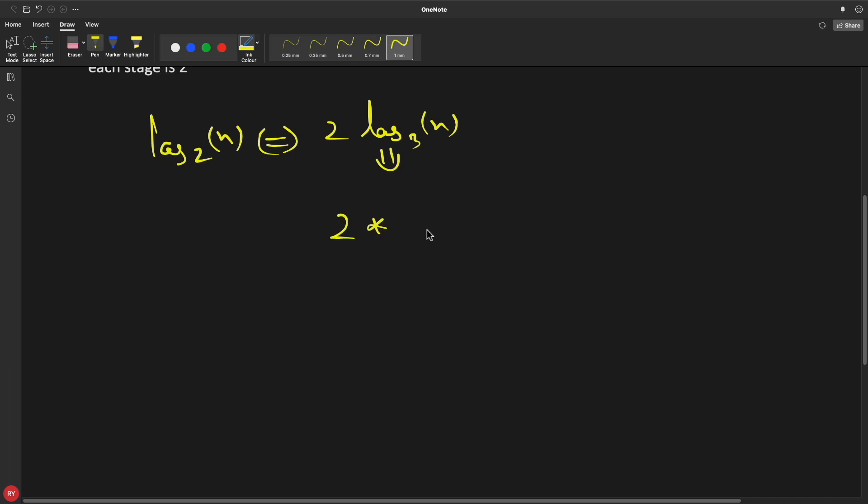We have 2 multiplied by log 2 divided by log 3, 3 multiplied by log₂ n. Okay, now you are comparing this one with this one.